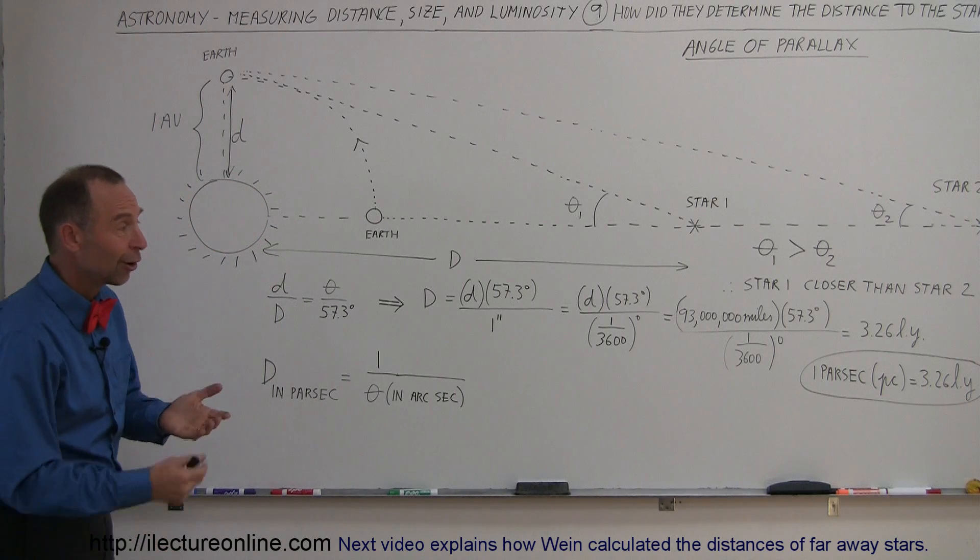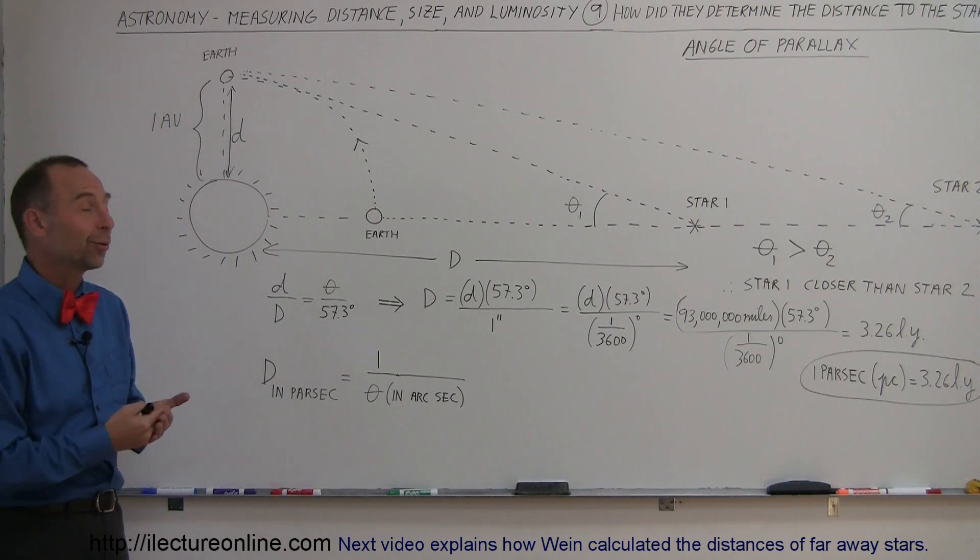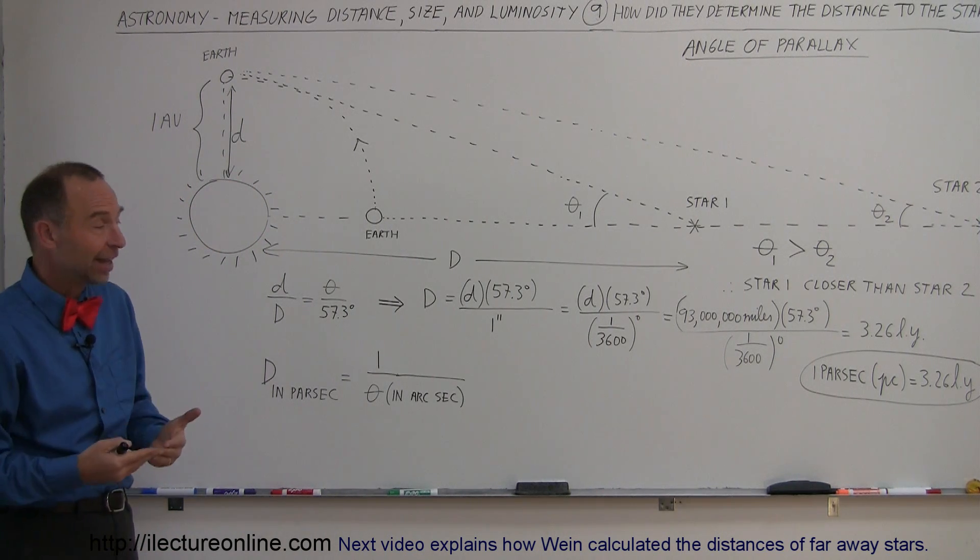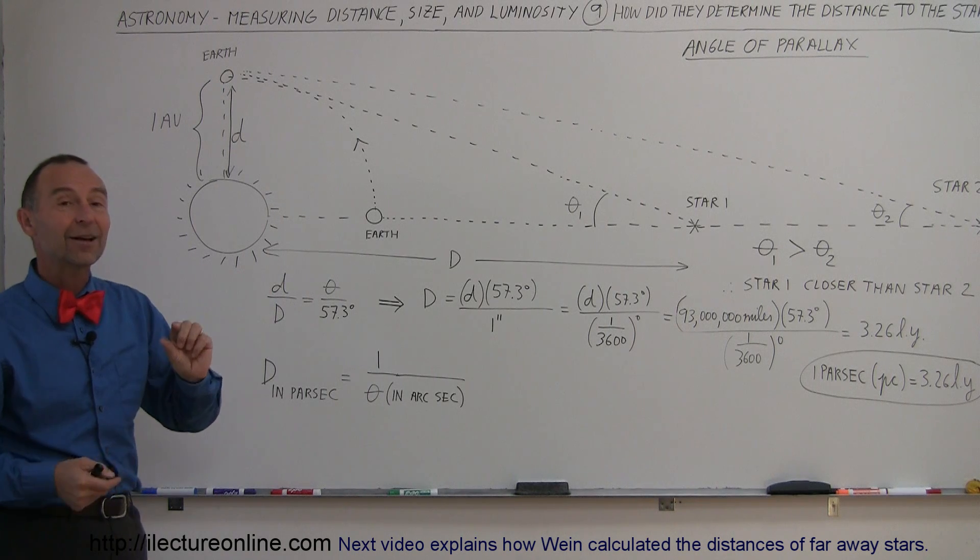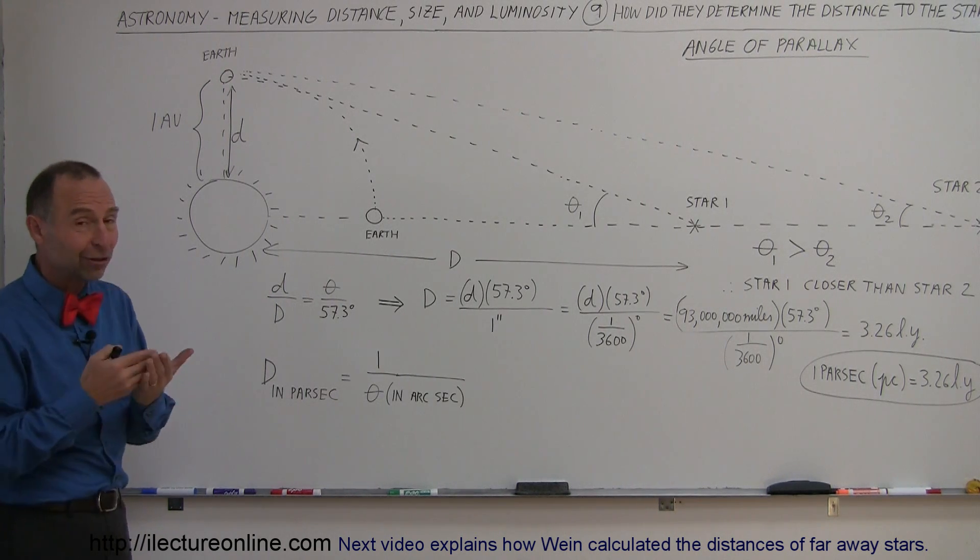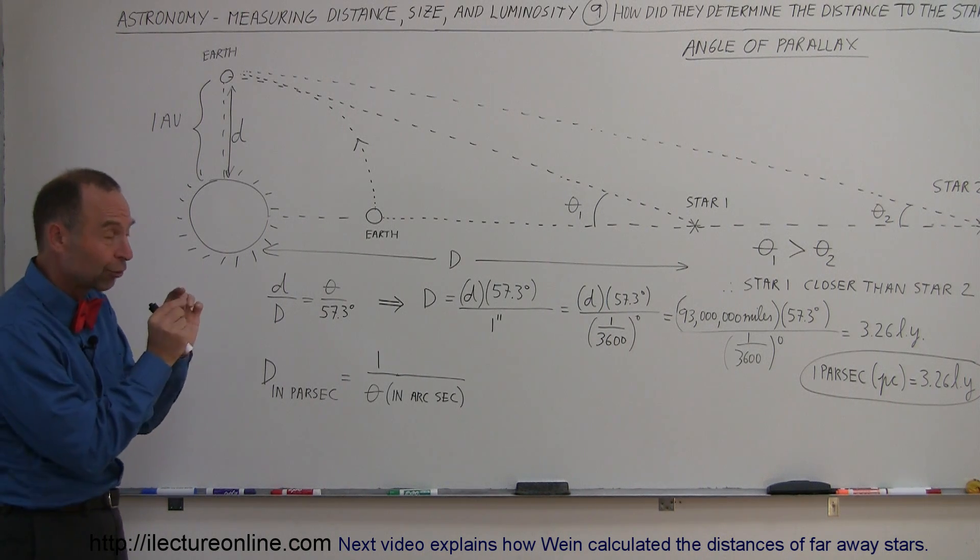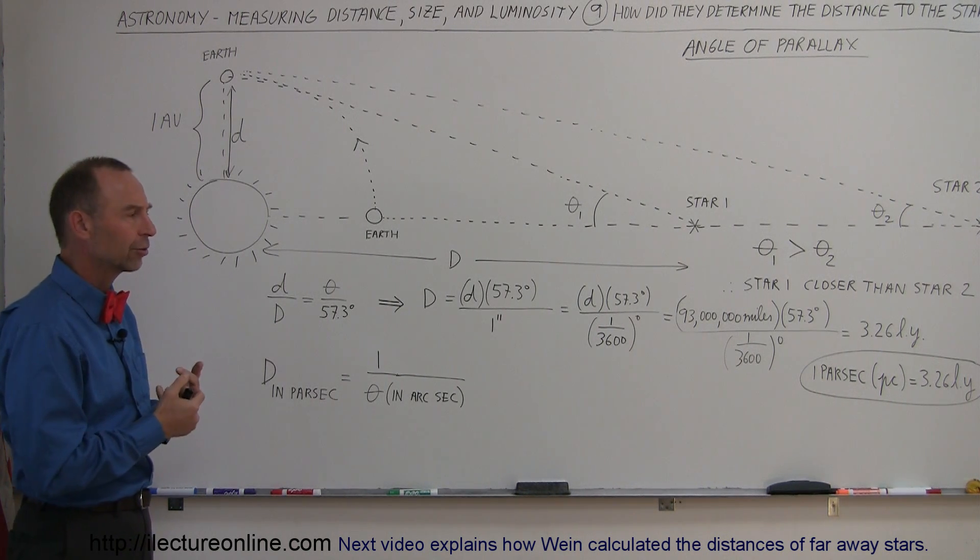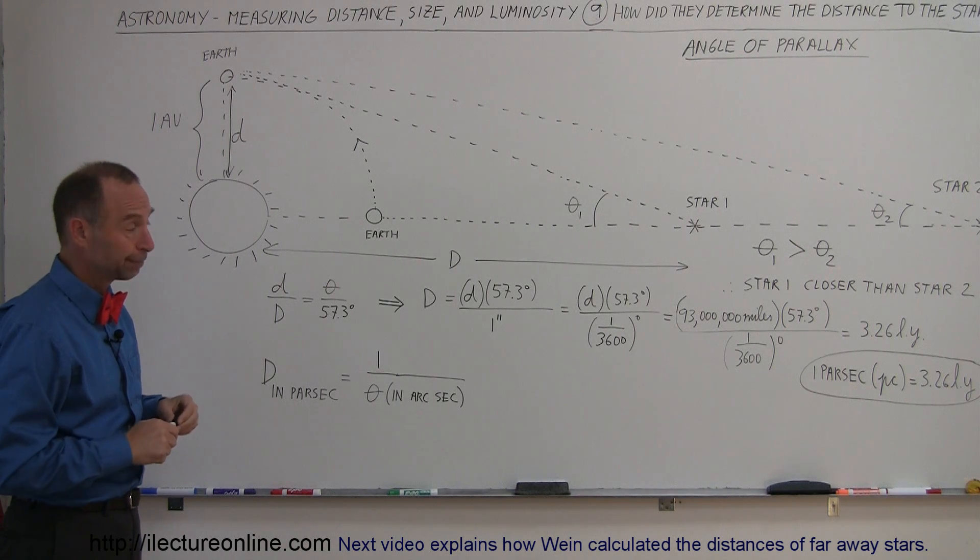Now, it turns out there are no stars that are actually that close to us. The closest star is about four and a half light years, so the biggest angle to the closest star would actually be less than a parsec, and it's very difficult with a telescope to measure those very small angles. So they had to have some pretty good quality telescopes at the time to be able to do that.